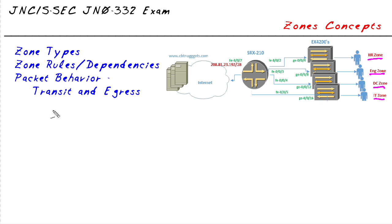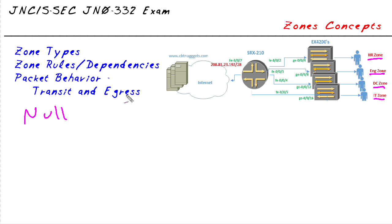There is a null zone — blank, if you will — and that exists by default. All interfaces that are not assigned anywhere else belong to that null zone. What happens is all traffic going to or from that zone is dropped, so you're not getting anywhere by default.